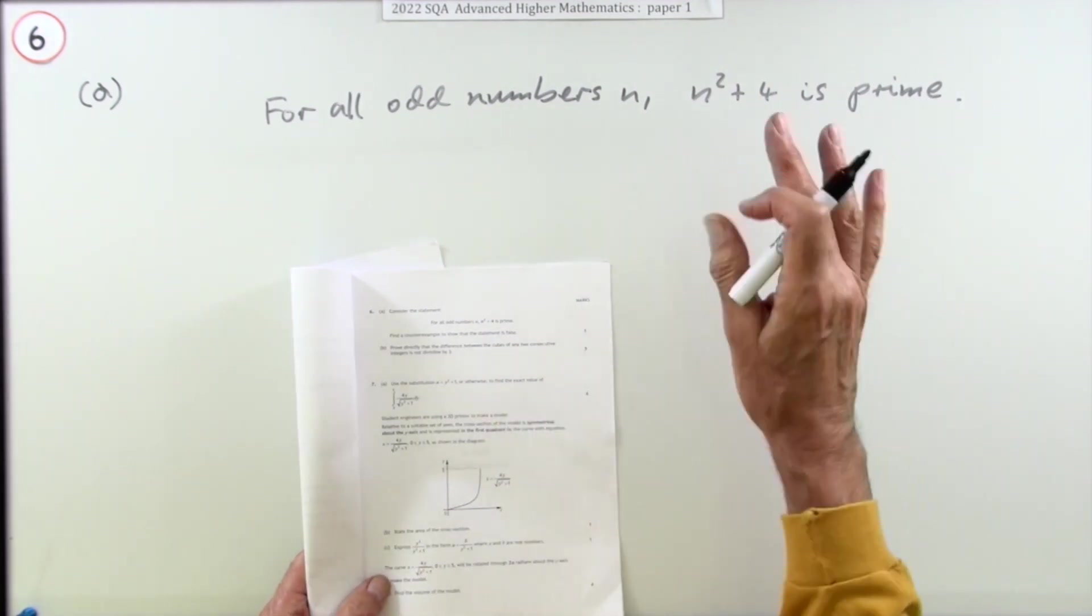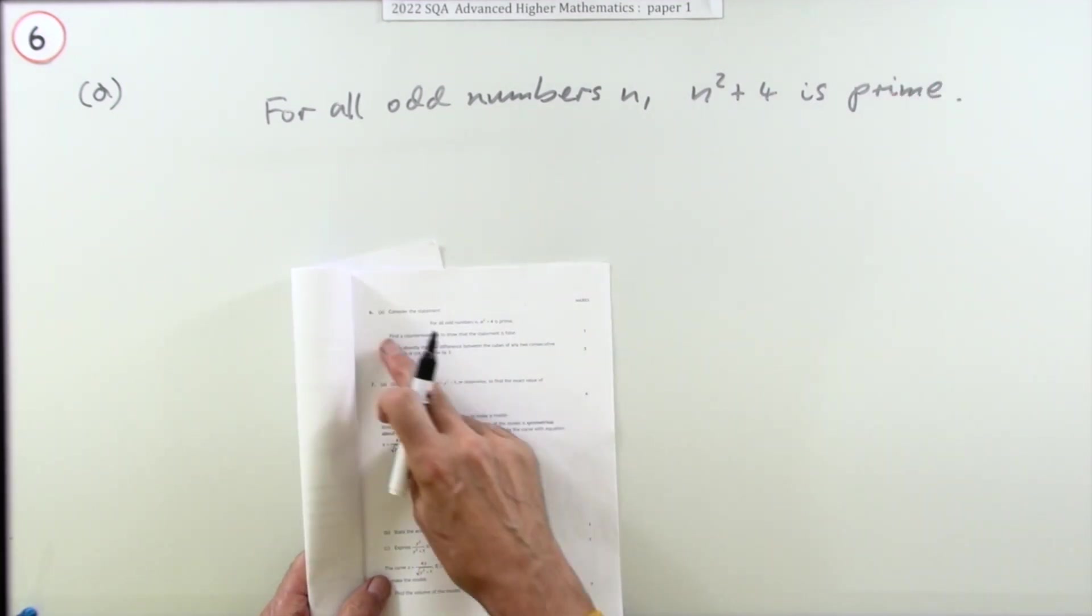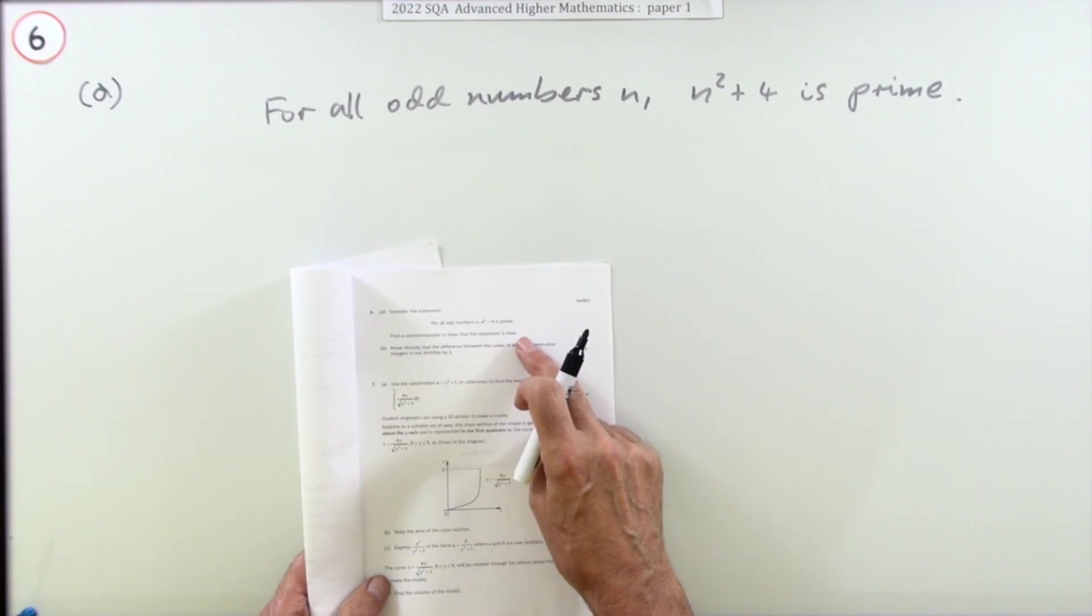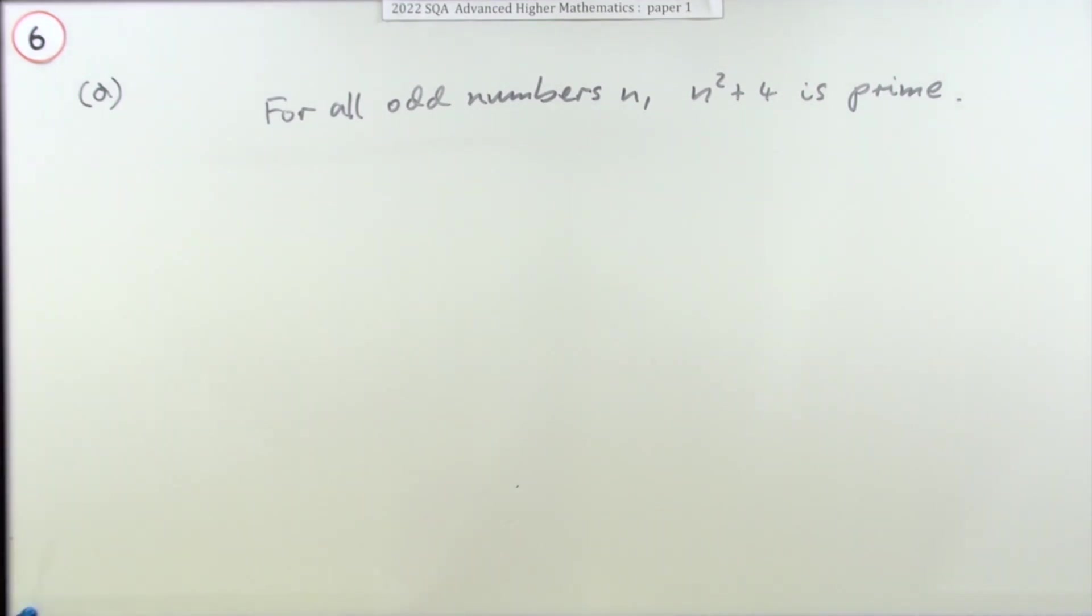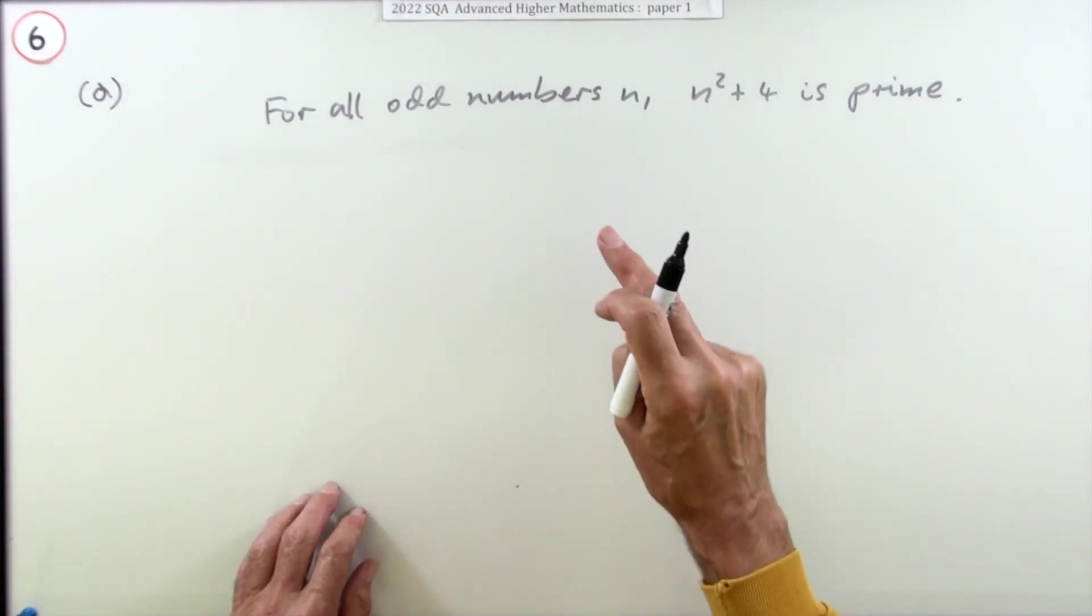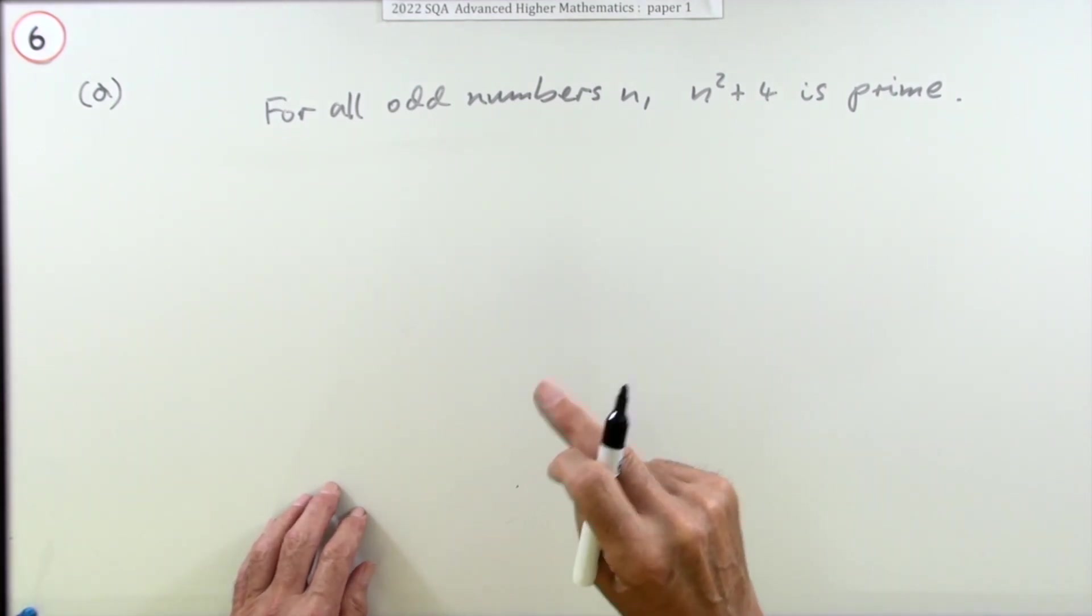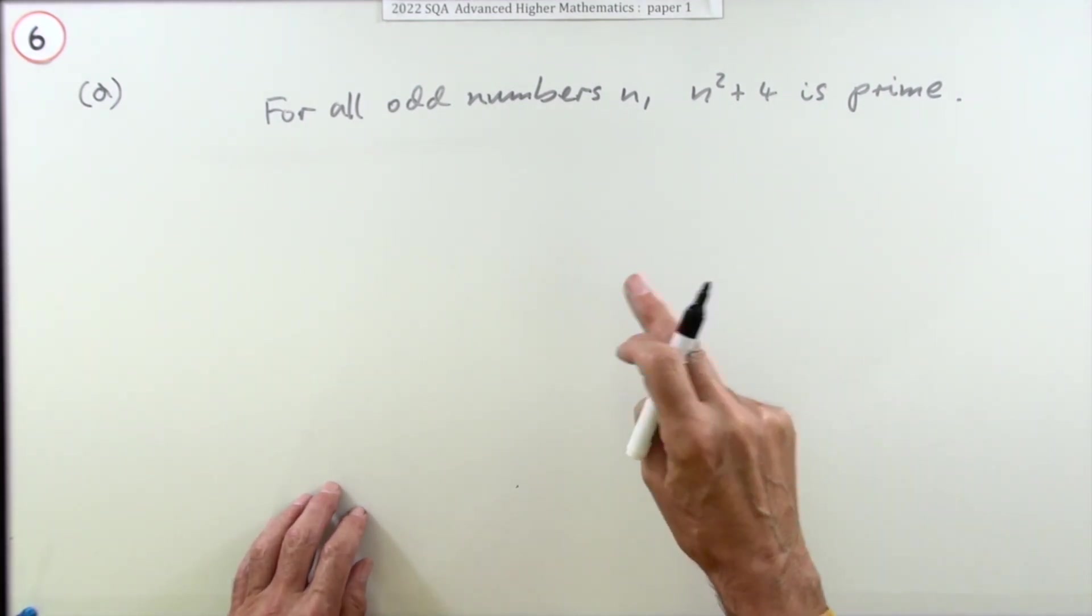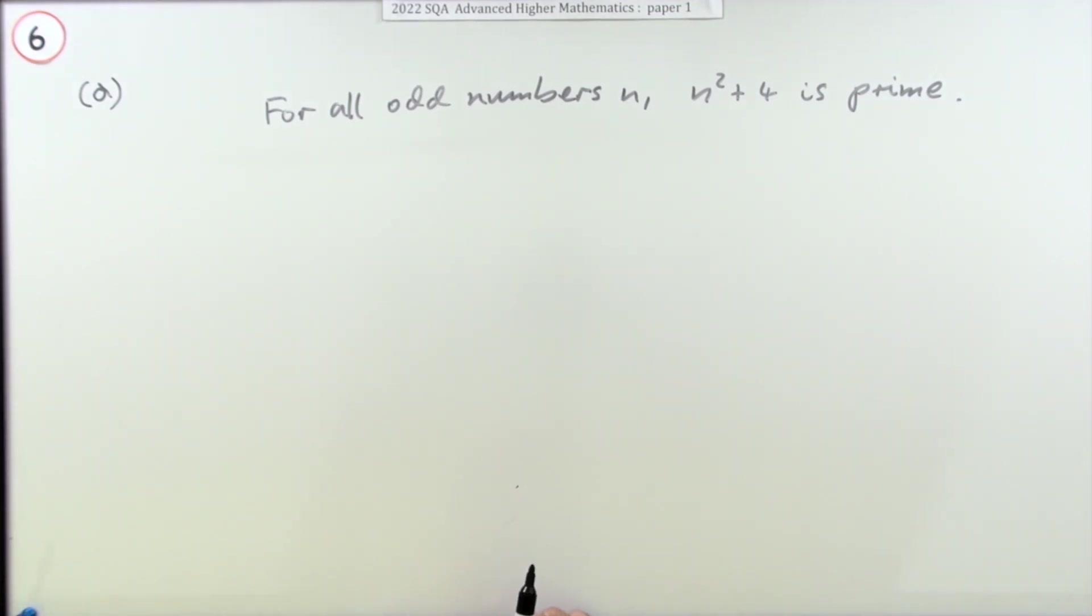Find a counterexample to show the statement's false. It should have just said show the statement's false, and it was up to you to know that it would require a counterexample and that would be sufficient to disprove it.